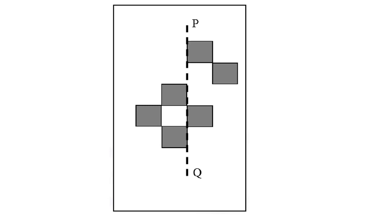We must add at least six more squares in order to make this pattern symmetric with respect to the line of symmetry PQ. Block number one is on the left-hand side of the line of symmetry, and corresponding to this block we have to make one more block on the right-hand side.